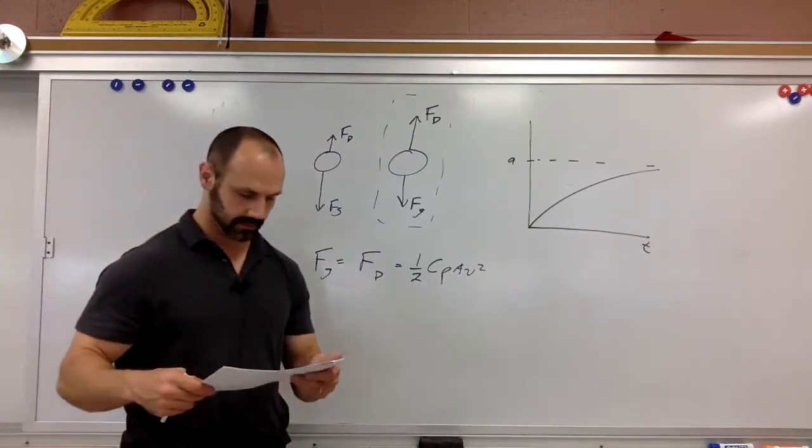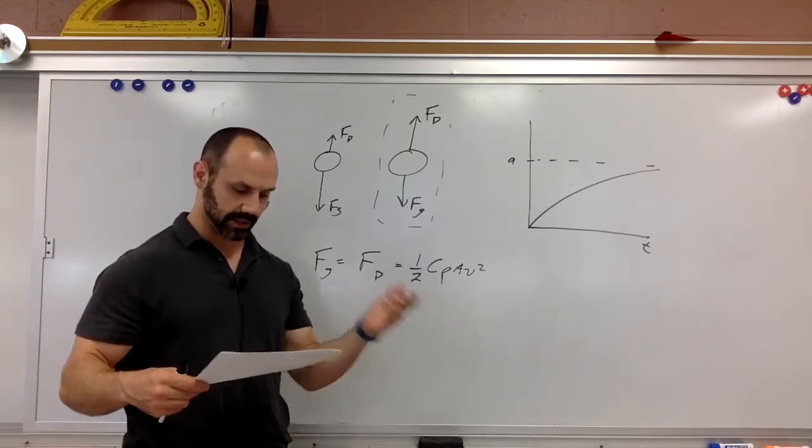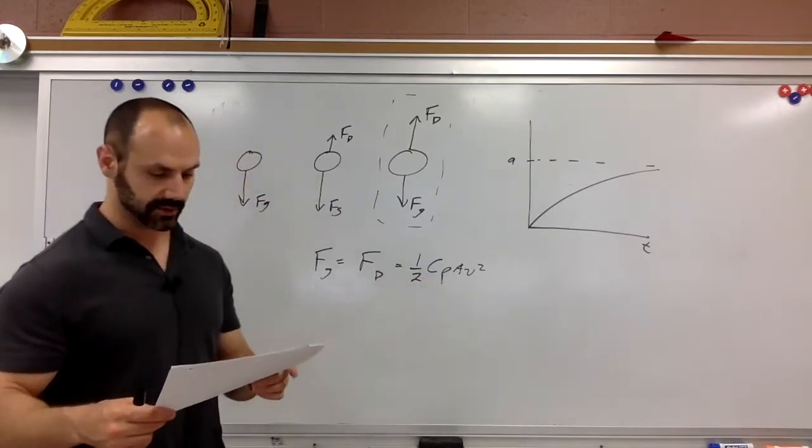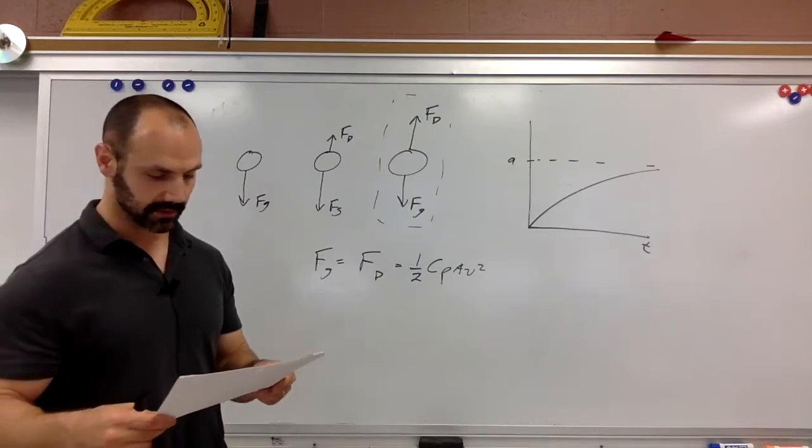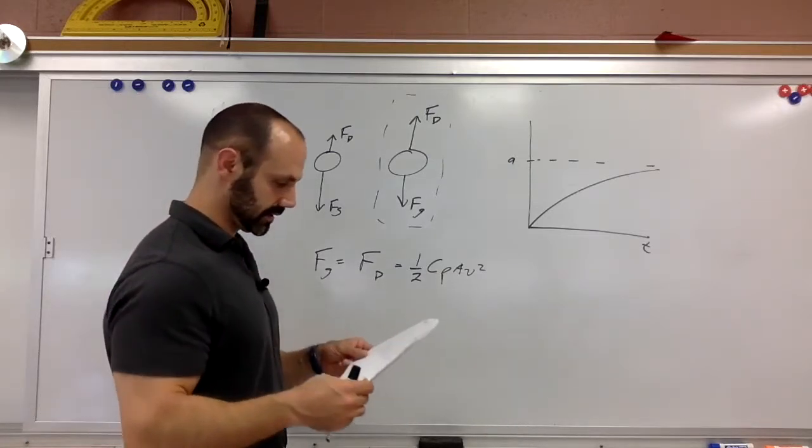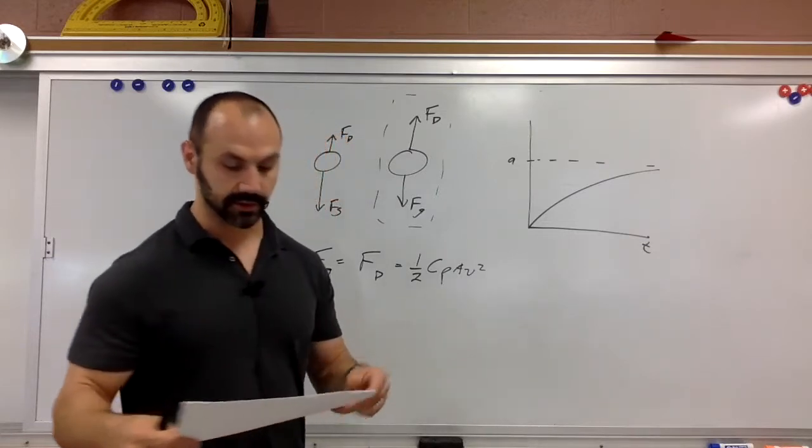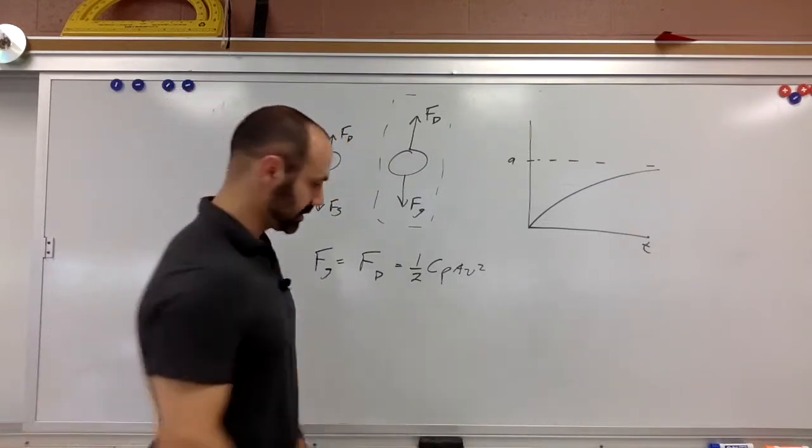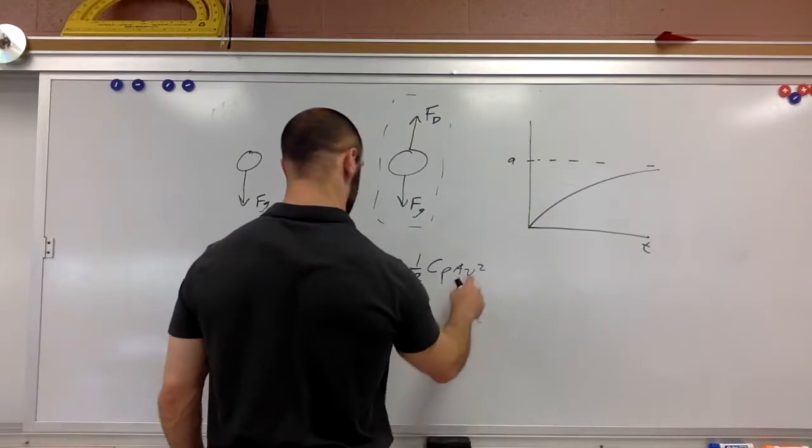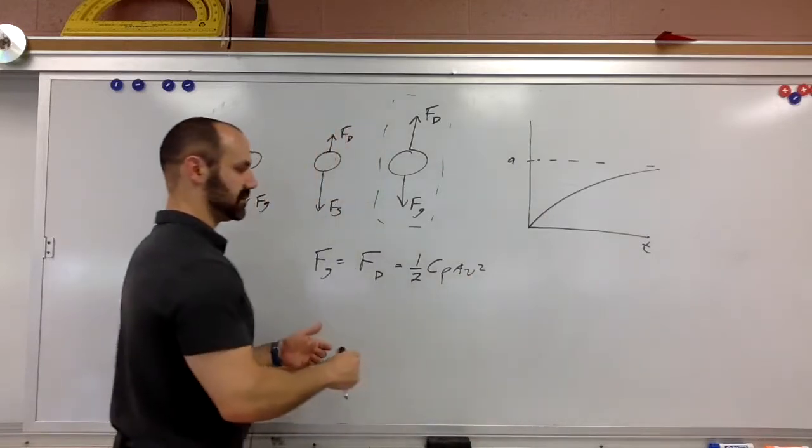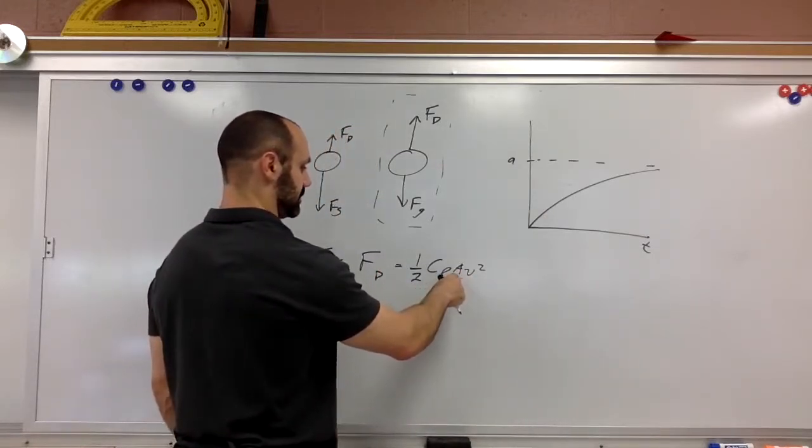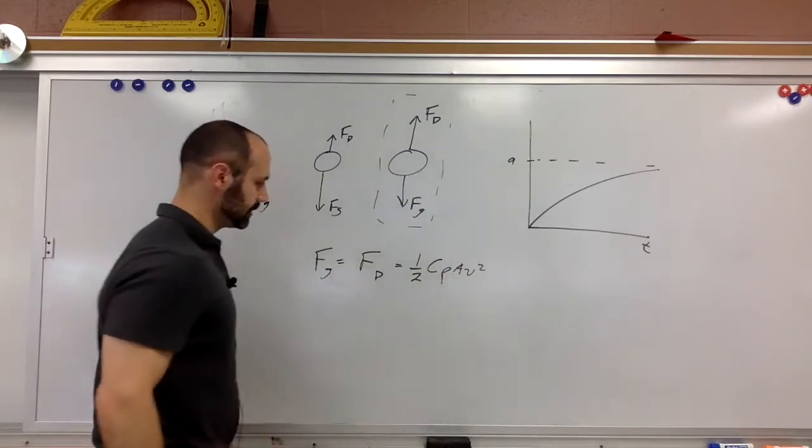Here we have example one, a falling cat. Falling cat reaches a terminal speed of 97 kilometers per hour while it is tucked in and then stretches out doubling A. So how fast is it moving when it reaches a new terminal speed? So we know the terminal speed at one time. Now we want to know what's the terminal speed at another time if this doubles.